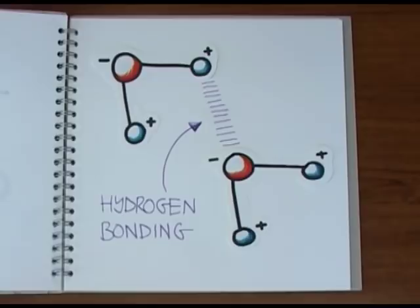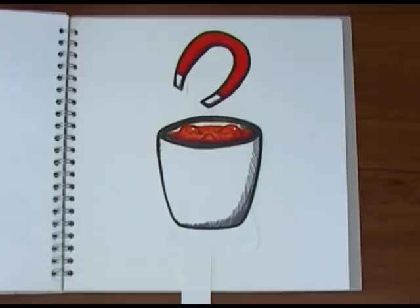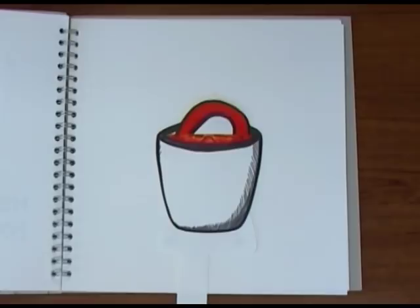Most substances are more dense as solids than liquids, meaning that the solid form would sink in the liquid. So a piece of solid iron, for example, would sink in a pot of molten iron. This is because the molecules are held more closely together in the solid state.